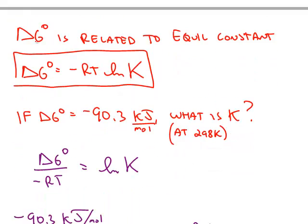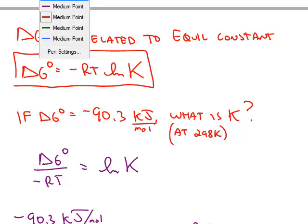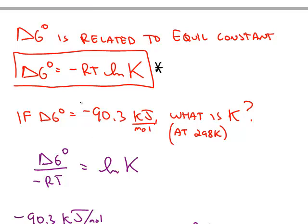Delta G standard is also related to the equilibrium constant by this formula. Delta G standard is minus the gas constant again times the temperature times the natural log of the thermodynamic equilibrium constant.